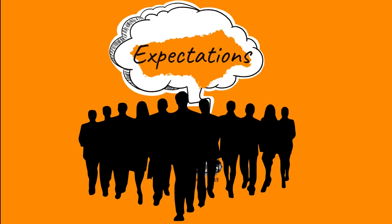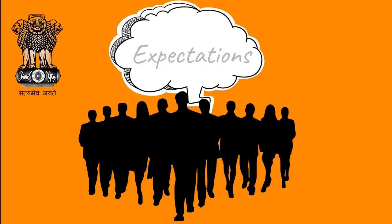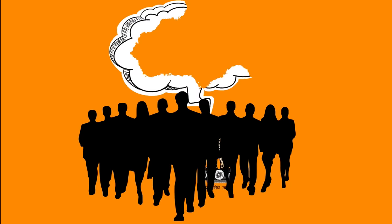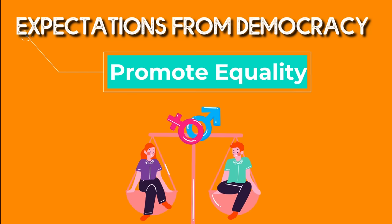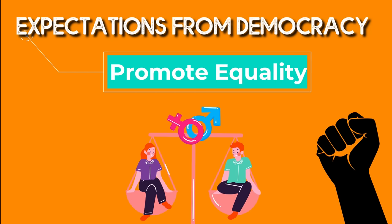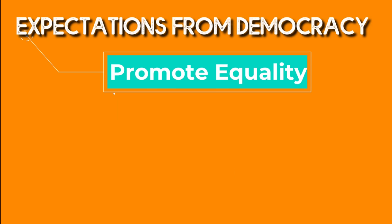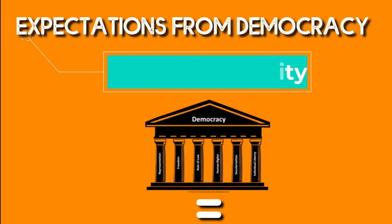In the same way, government systems have expectations. If we adopt democracy, there are things we can expect from it. Point number one: promote equality. For this, we have rights — for example, right to education, right to freedom. Overall, we get to see equality in democracy.